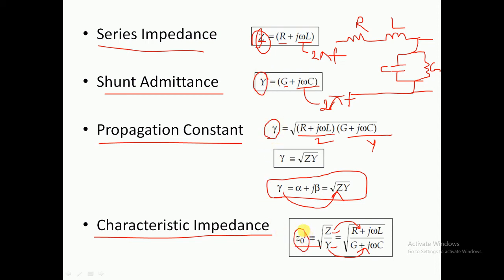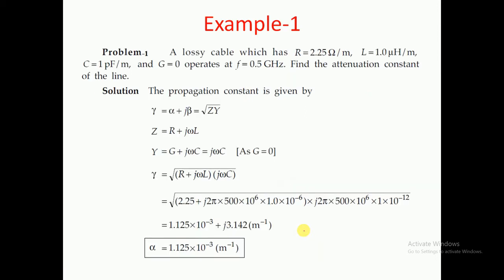Let us solve one problem. For a transmission line, the given values are: R = 2.25 Ω/m, L = 1.0 μH/m, C = 1 pF/m, G = 0.25 Mho/m. We need to find the attenuation constant at an operating frequency of F = 0.5 GHz.